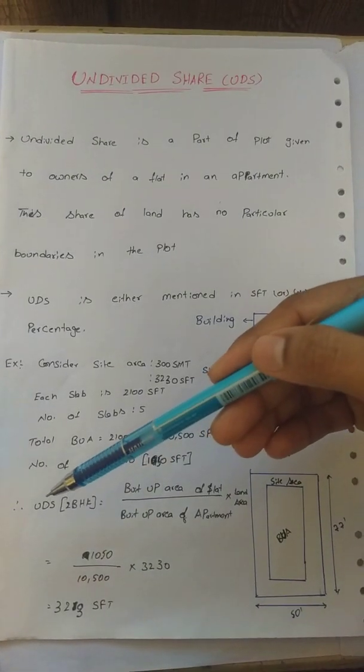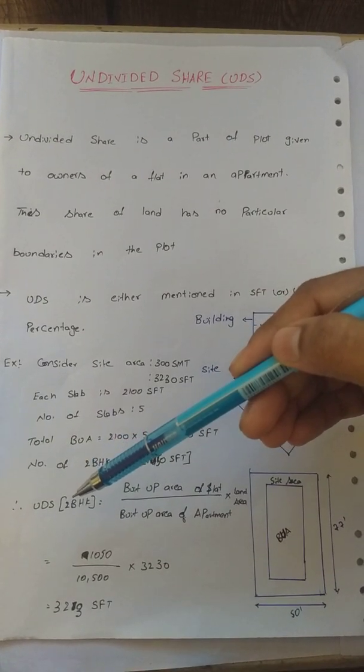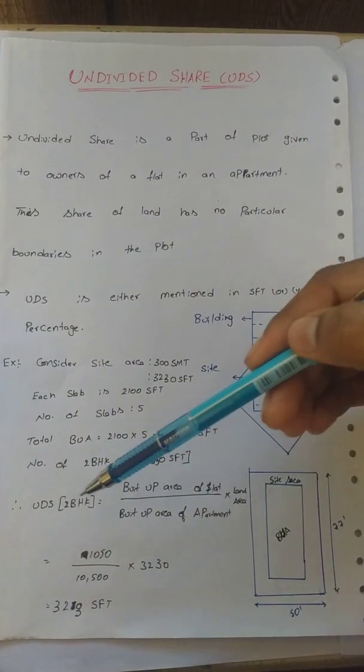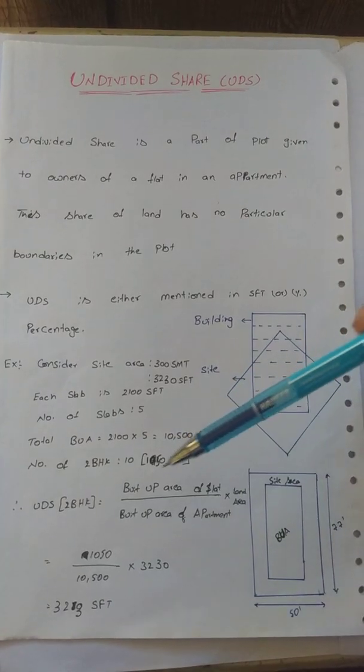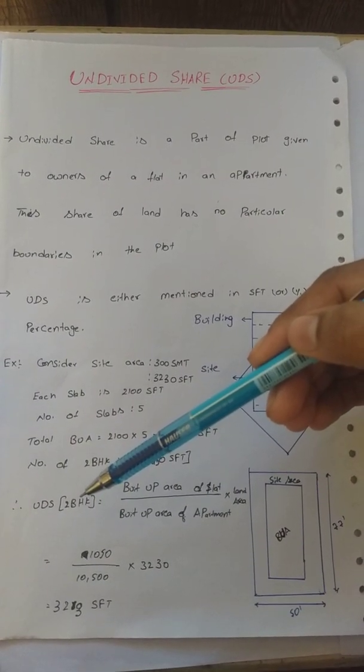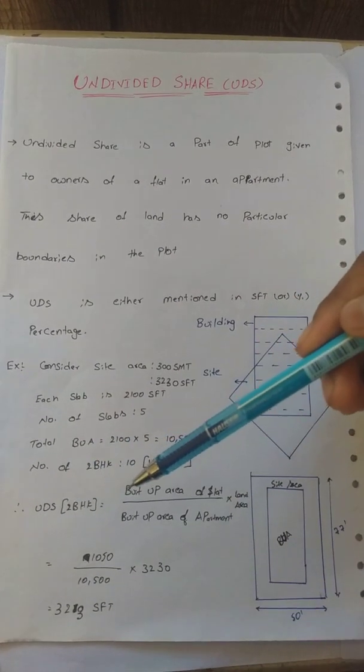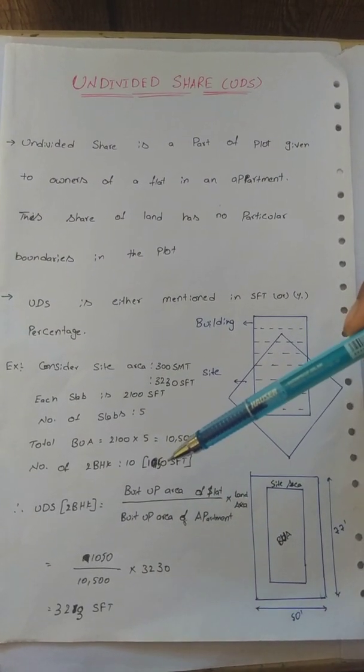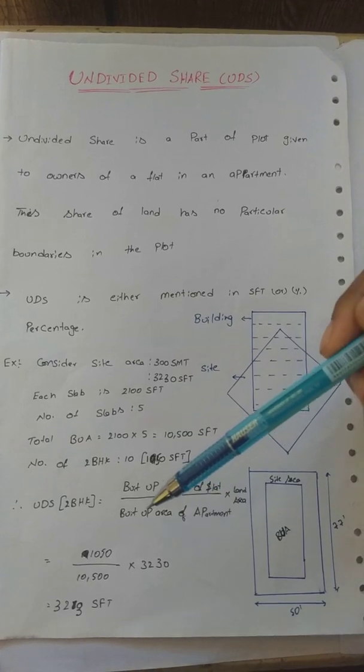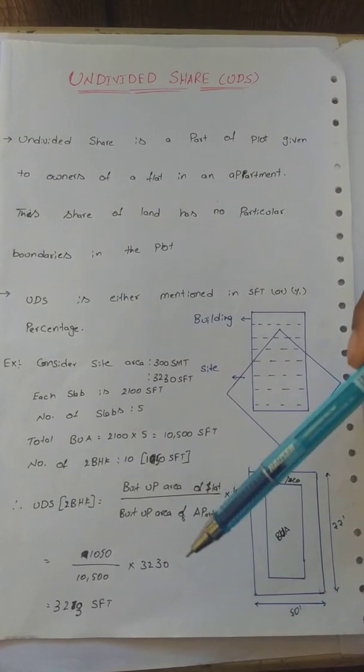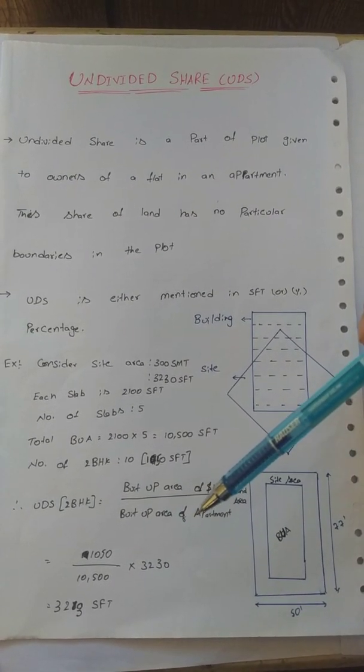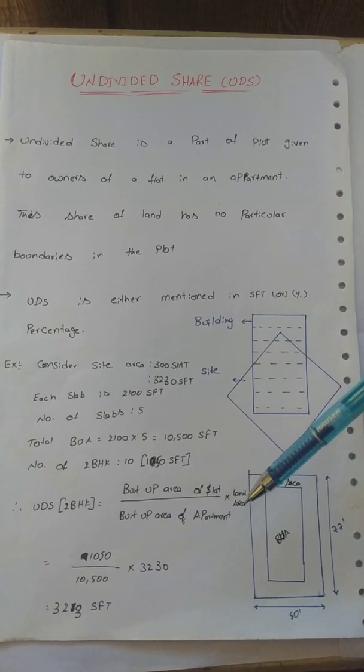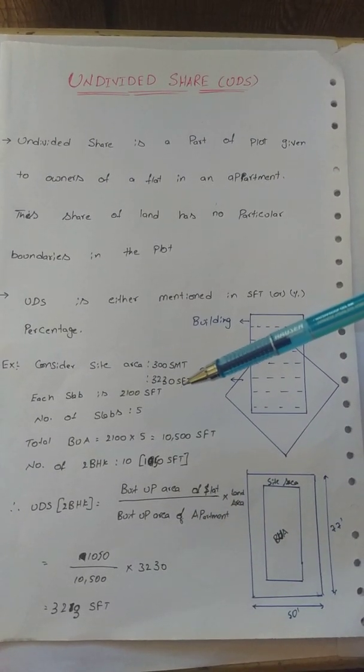So now we have the calculation. Undivided share for 2BHK or 3BHK - undivided share equals built-up area of flat divided by built-up area of apartments. This is total built-up area of apartments, multiplied by land area. This land area calculation is very easy in square feet.